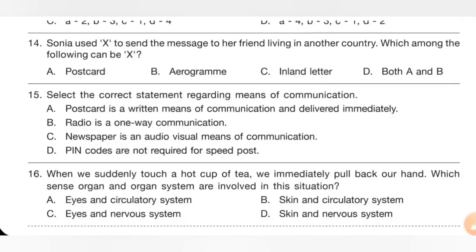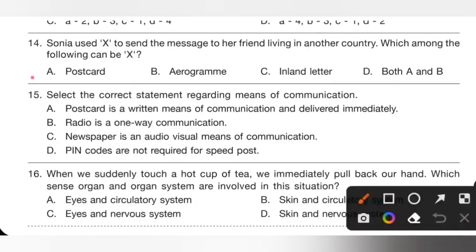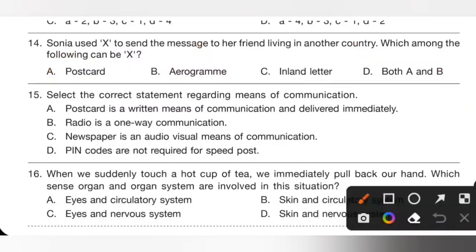Question 14: Sonia used X to send a message to her friend living in another country. Which among the following can be X? Options: A. Postcard, B. Aerogram, C. Inland letter, D. Both A and B. Postcard can be used to send messages within the country and to another country. Aerogram is specifically for sending letters to another country. Inland letter is only for within the country. So both A and B can be used — option D is the correct answer.